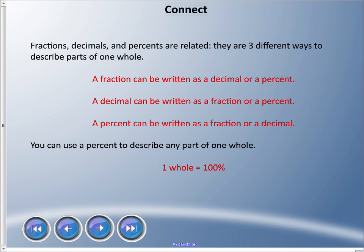Fractions, decimals, and percents are related; they are three different ways to describe parts of one whole. A fraction can be written as a decimal or a percent, a decimal can be written as a fraction or a percent, and a percent can be written as a fraction or a decimal. You can use a percent to describe any part of one whole, and one whole is 100 percent.